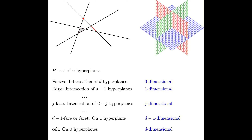In 3D, a facet will look like a plane. And finally, we have cells. Cells are d-dimensional objects that lie on zero hyperplanes. You can define cells as the pockets that are created in between these hyperplanes in d-dimensional space. So in 2D, for example, this gray area is a cell. And in this picture in 3D, you have eight cells — four above the blue hyperplane and four below the blue hyperplane.